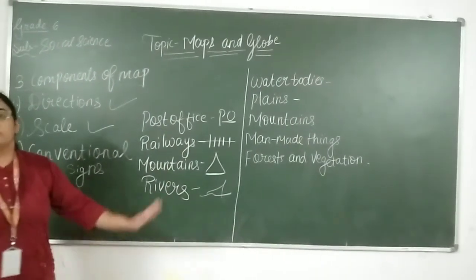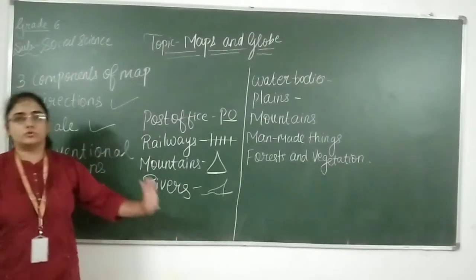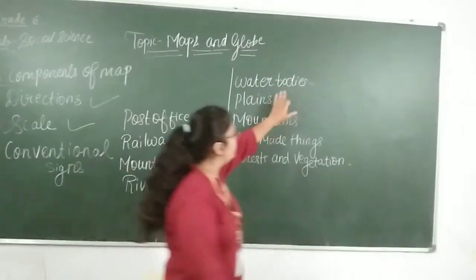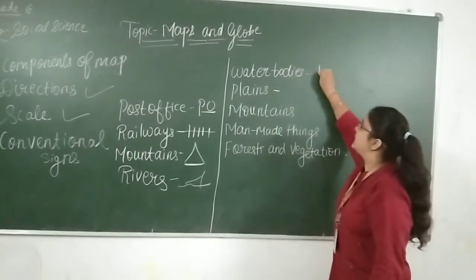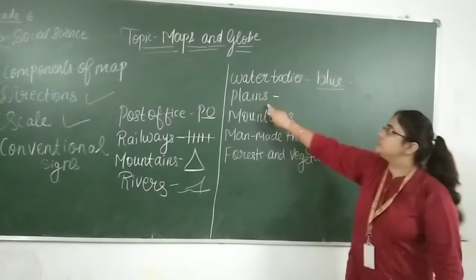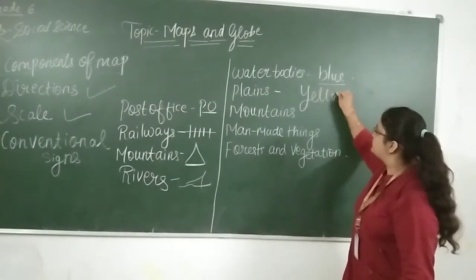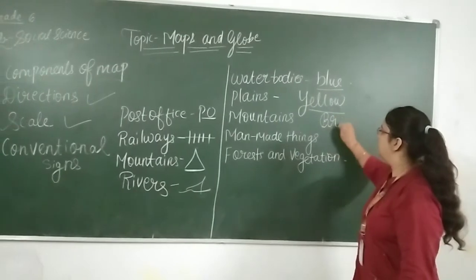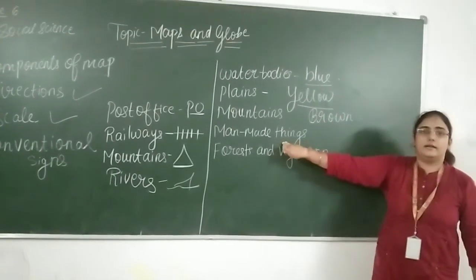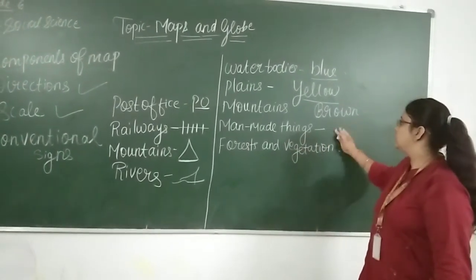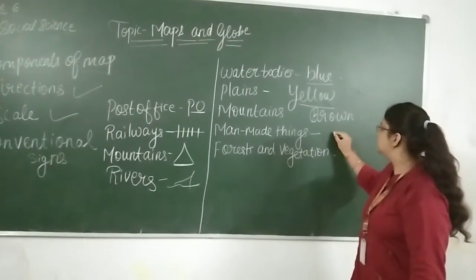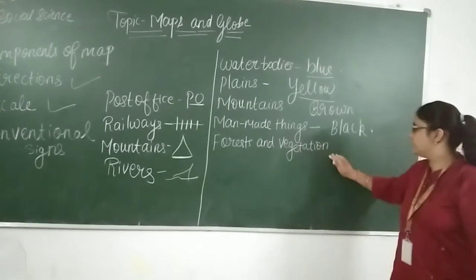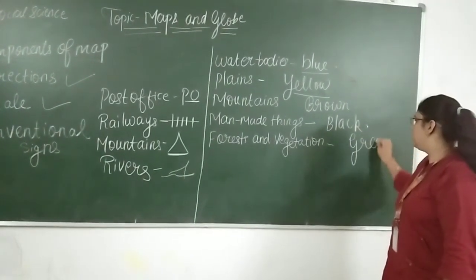For rivers, the conventional sign looks like a flowing line. There are many more conventional signs that will be sent in the assignment. Other than signs, colors are also used in the map: water bodies are shown in blue, mountains in brown, man-made things like buildings in black, and forests and vegetation in green.